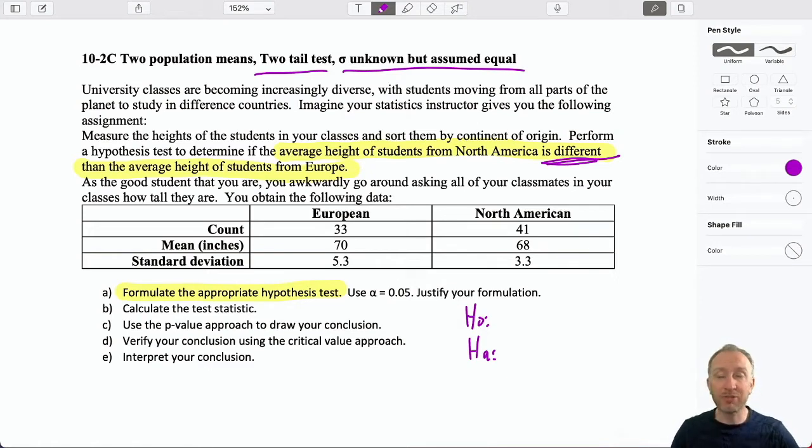And of course we can also see that there's no hypothesized magnitude of a difference. Are they different by 5 inches or 10 inches or whatever? There's no specific magnitude of a difference. Only are they different. So this is telling me that I have a two-tailed test with a hypothesized value of zero.